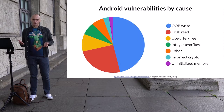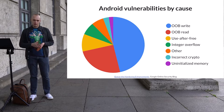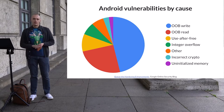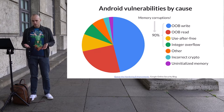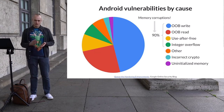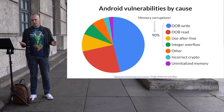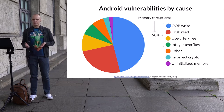A couple of years ago, the Android security team decided to find out the main cause of vulnerabilities in Android, and they studied the bugs reported through their bug bounty program. As they discovered, 90% of those bugs were memory corruptions. Of course, bugs reported through a bug bounty are only a fraction of bugs present on real devices, and it also could be that memory corruptions are just the low-hanging fruit. Still, this study shows that most of the bugs that exist on Android devices today are memory corruptions.